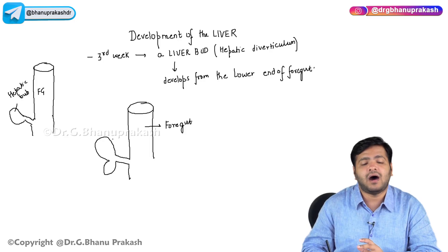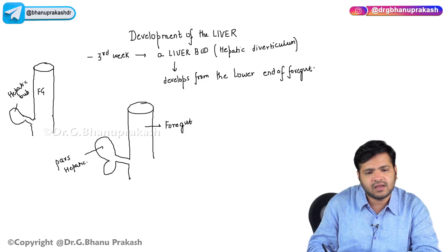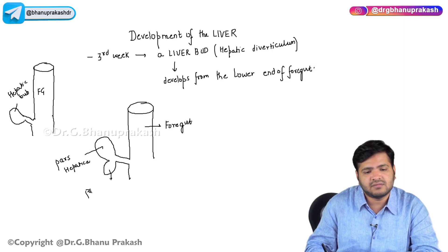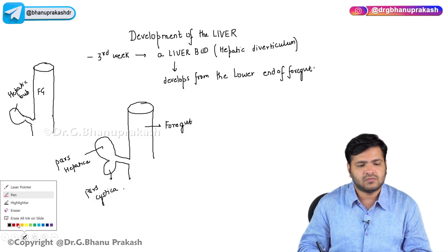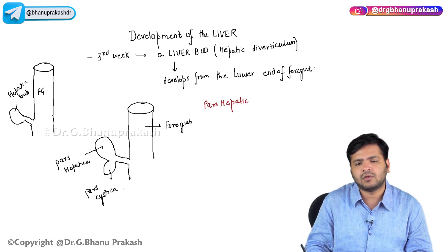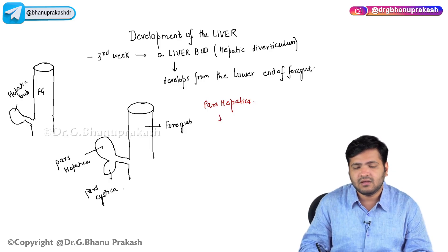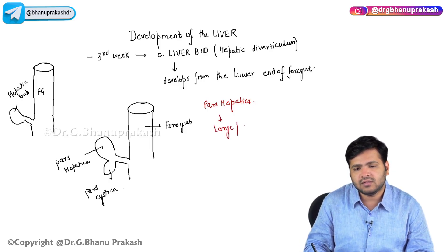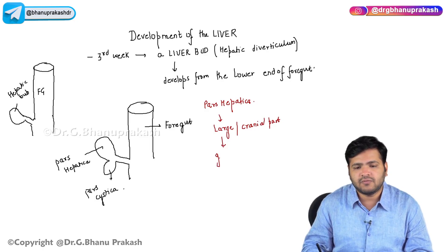One part is called as the pars hepatica and the lower part is called as the pars cystica. The pars hepatica is the large cranial part, as it is just above the pars cystica.